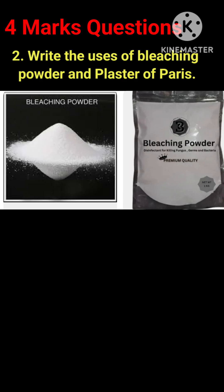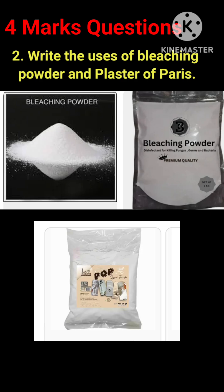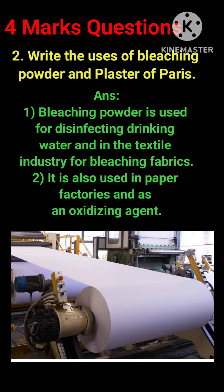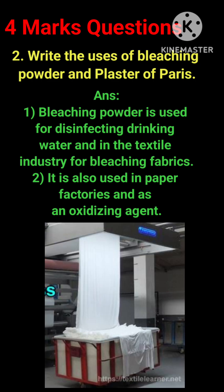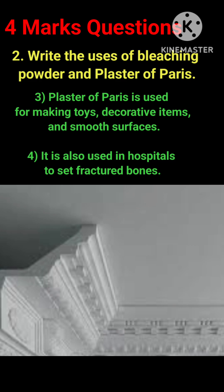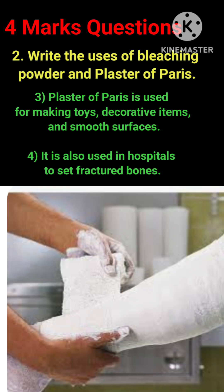Question 2: Write the uses of bleaching powder and plaster of Paris. Answer: Bleaching powder is used for disinfecting drinking water and in the textile industry for bleaching fabrics. It is also used in paper factories and as an oxidizing agent. Plaster of Paris is used for making toys, decorative items, and smooth surfaces, and in hospitals to set fractured bones.